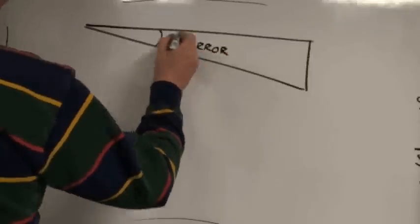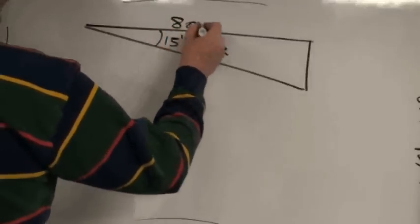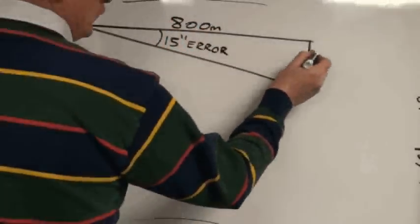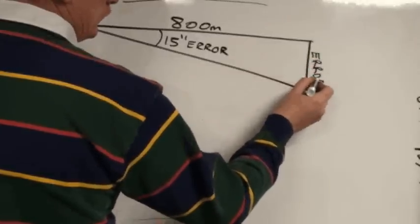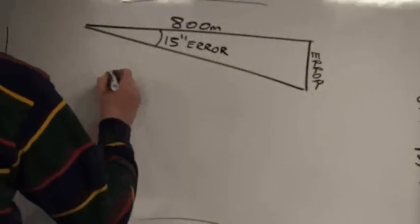That 15-second error over an 800-meter distance creates a perpendicular error on our sighting, and that's what we want to calculate.